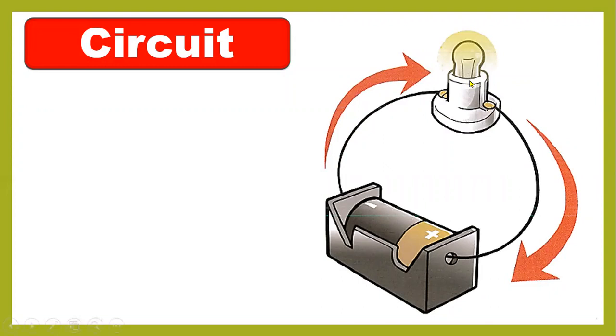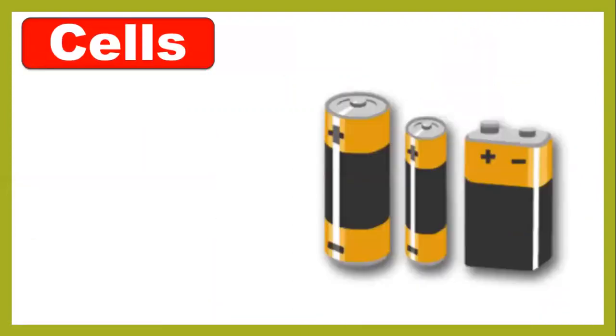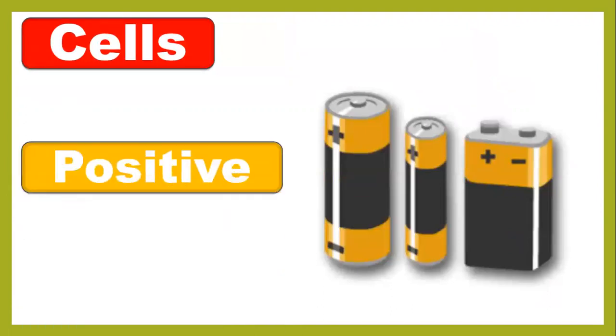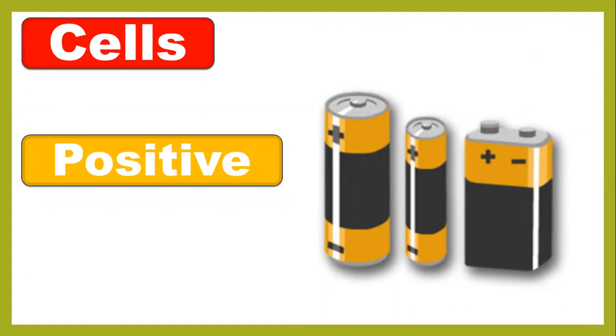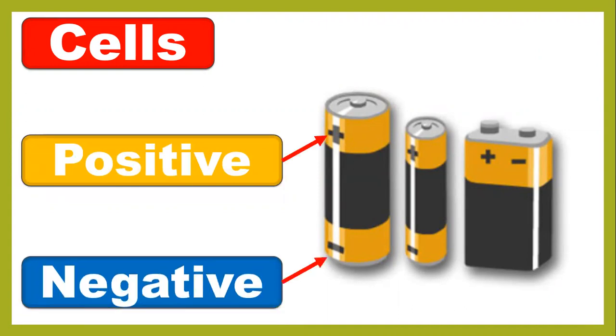We use switches to turn off and turn on the electricity. In the previous lesson we talked about batteries, which have two terminals: positive and negative. Plus means positive, minus means negative terminals.